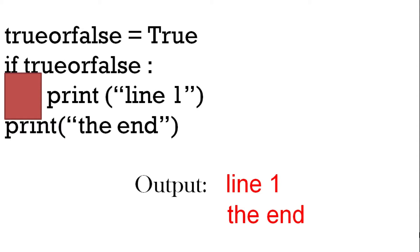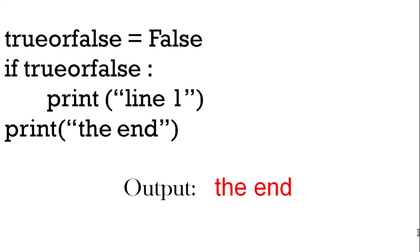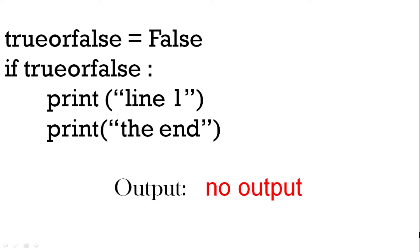Print 'the end' has no space in front of it, so it will always execute. Remember our red block — so this prints line one if the if statement is true; it doesn't print line one if it's false, but it always prints 'the end'. Here it's false but print 'the end' will always happen. If true or false is true it will do both, but in this example it's false so both line one and 'the end' are part of the if statement — no output. The space versus no space makes a very big difference.